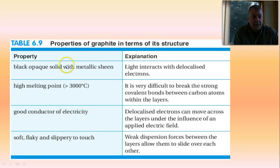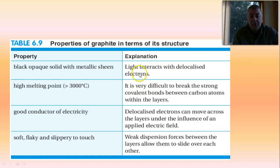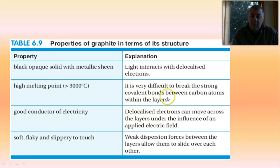So how do we explain that? It's opaque and has a metallic sheen because of the way it interacts with light, due to those delocalized electrons. Remember how metals have a metallic luster because of delocalized electrons? Well, graphite has delocalized electrons as well, hence the metallic sheen. High melting point? The covalent bonds are very strong, so it takes a lot of energy to break them — exactly the same explanation as for covalent network solids like diamond and quartz. Good conductor of electricity: those delocalized electrons between the layers can carry a current.